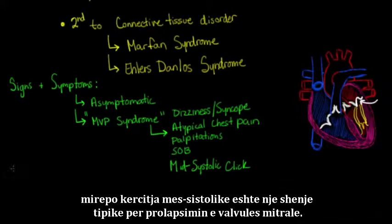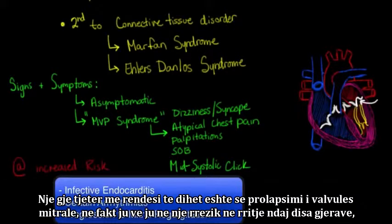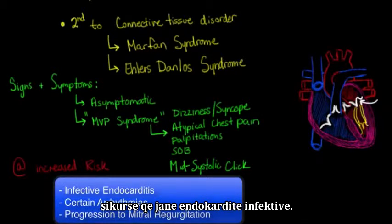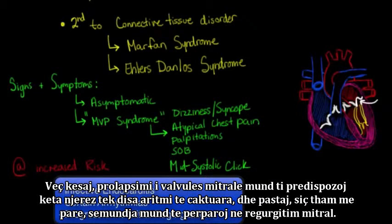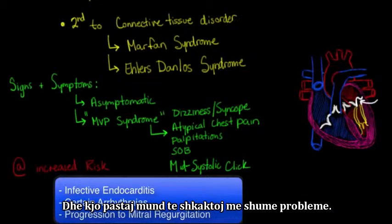The mid-systolic click is a classic sign for mitral valve prolapse. Importantly, mitral valve prolapse puts you at increased risk for a couple of things, such as infective endocarditis — since this valve is not totally normal, bacteria are slightly more likely to colonize and infect it. In addition, mitral valve prolapse may predispose people to certain arrhythmias, and like we said, it can actually progress to mitral regurgitation, causing further problems.